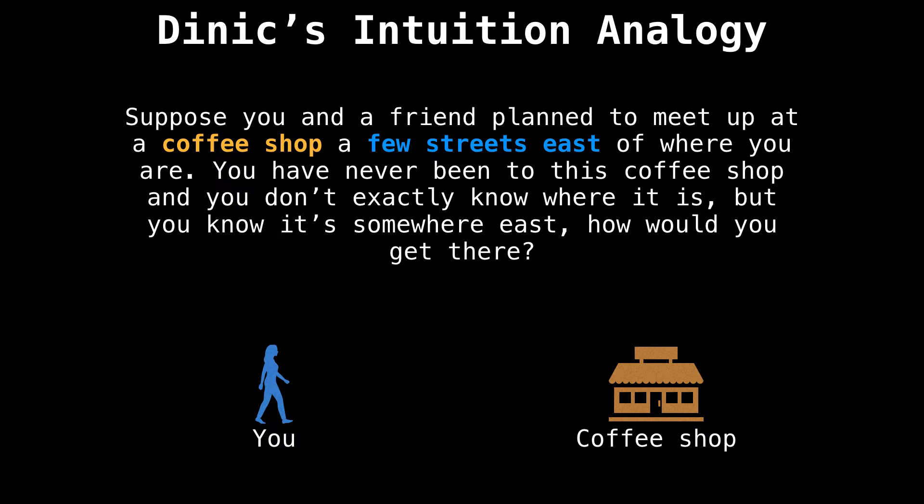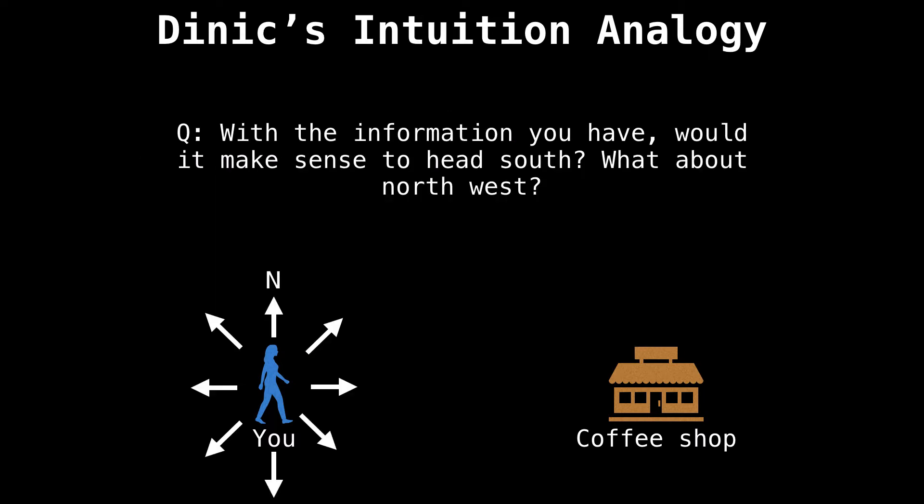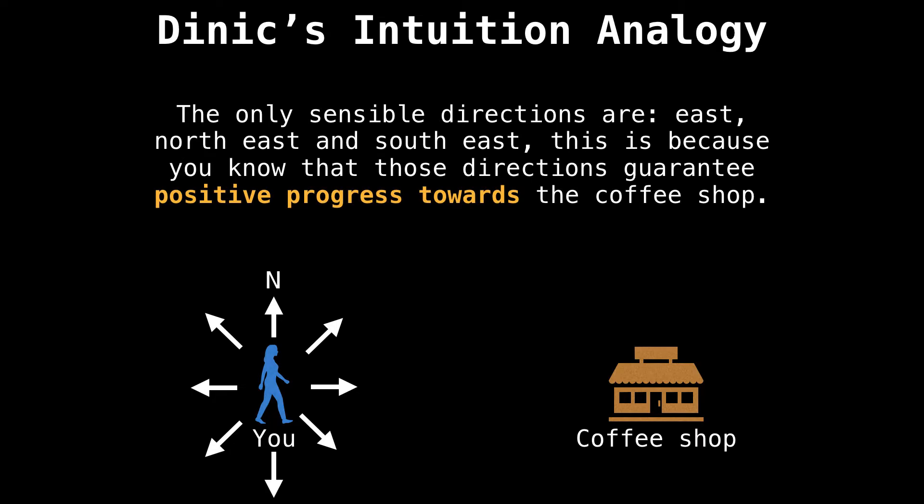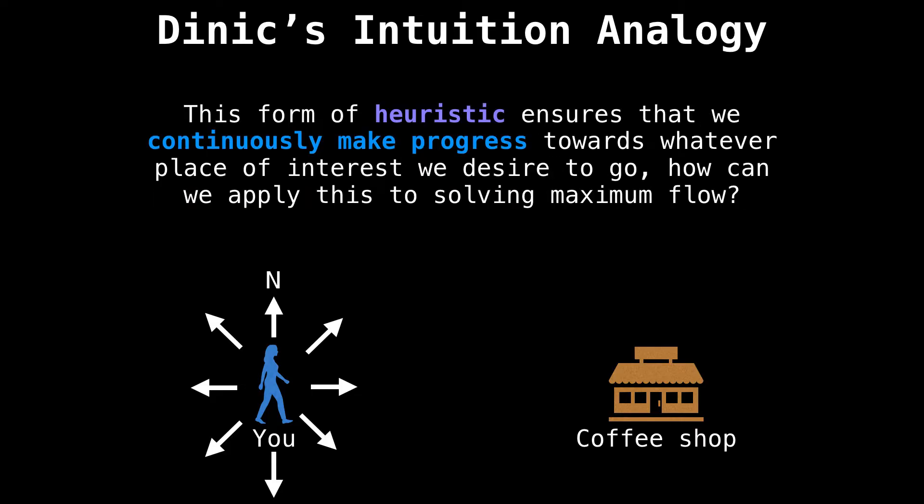With the information you have, would it make sense to head south? What about northwest? The only sensible directions are east, northeast and southeast. This is because you know that those directions guarantee that you make positive progress towards the coffee shop. This form of heuristic ensures that we continuously make progress towards whatever place of interest we desire to go.